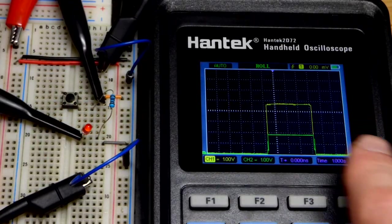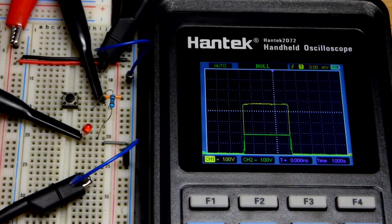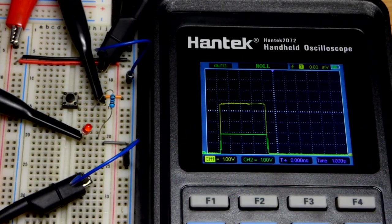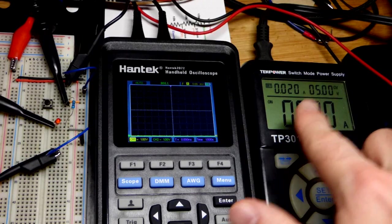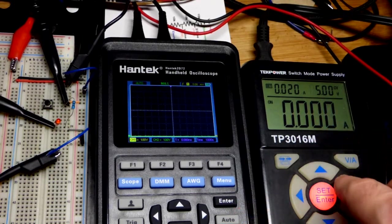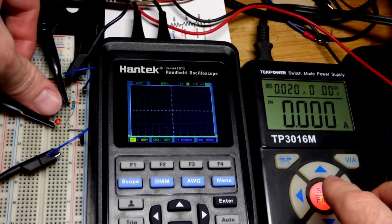You can see that waveform. We have the oscilloscope in roll mode, rolling across about one second per division. Now we're going to zoom back so we can see the power supply and change the voltage.